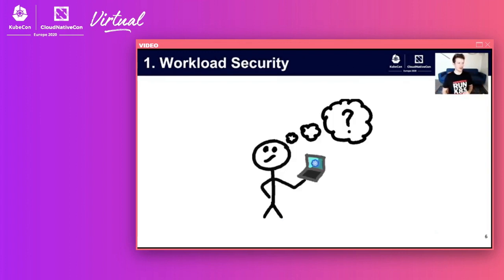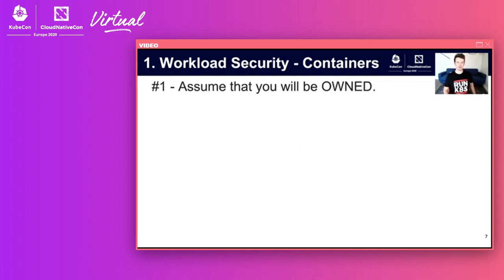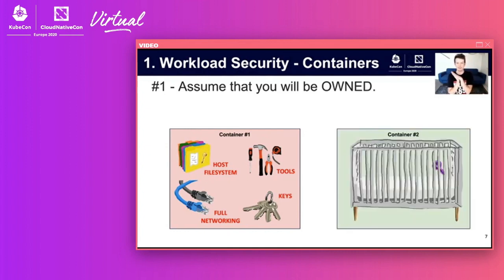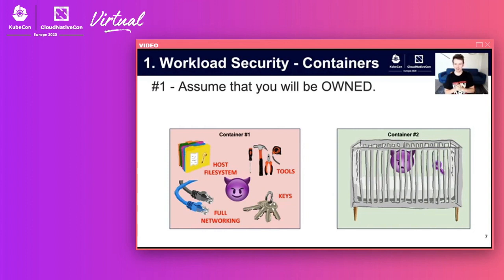Starting with workload security: you've got a workload to deploy and you want to make it secure. First and foremost, you need to assume that you'll be owned — this is a recurring theme throughout the entire talk. You've got to assume there's a yet-to-be-discovered vulnerability in one of your dependencies or base images that will allow remote code execution, data exfiltration, whatever your definition of 'owned' might be. Container one has all these Linux tools, file systems, keys, full networking capability. Container two is a soft-padded baby's crib with just one specific goal. Obviously we want our containers to look more like container two.